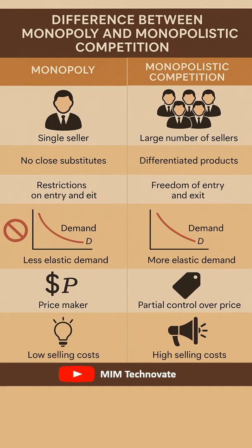Difference between monopoly and monopolistic competition. Monopoly refers to a market situation wherein a single seller exists, offering a product that has no close substitutes. In contrast, monopolistic competition describes a market situation characterized by a large number of firms, each selling closely related but differentiated products.